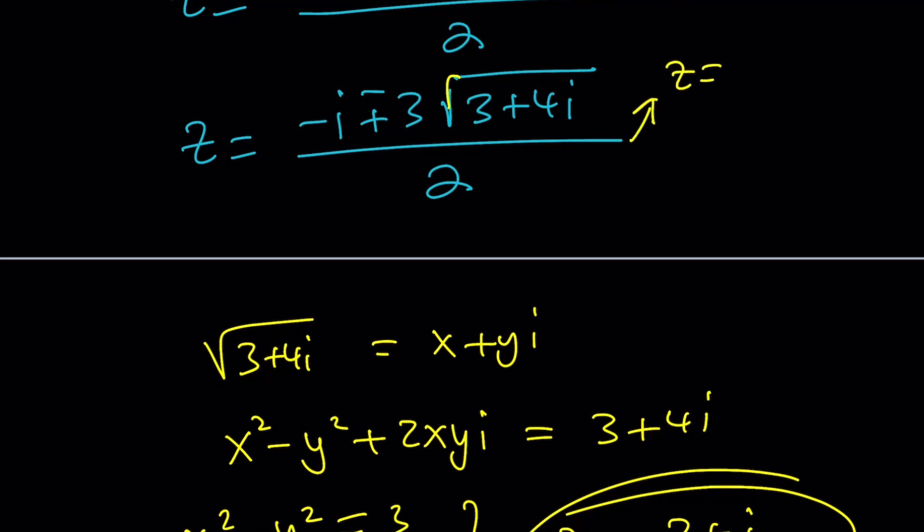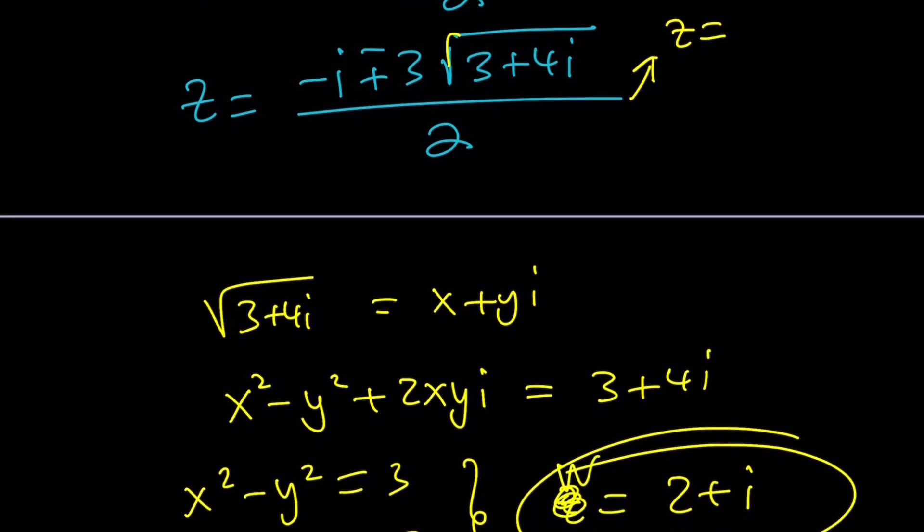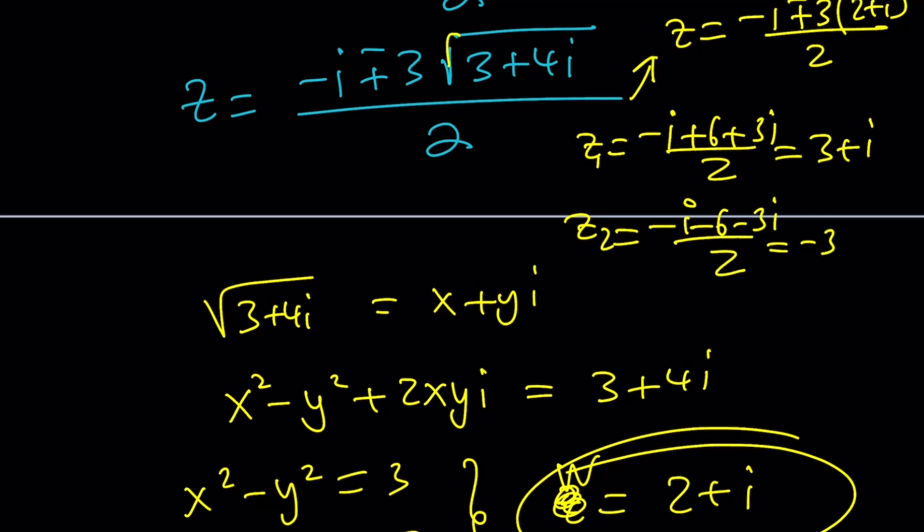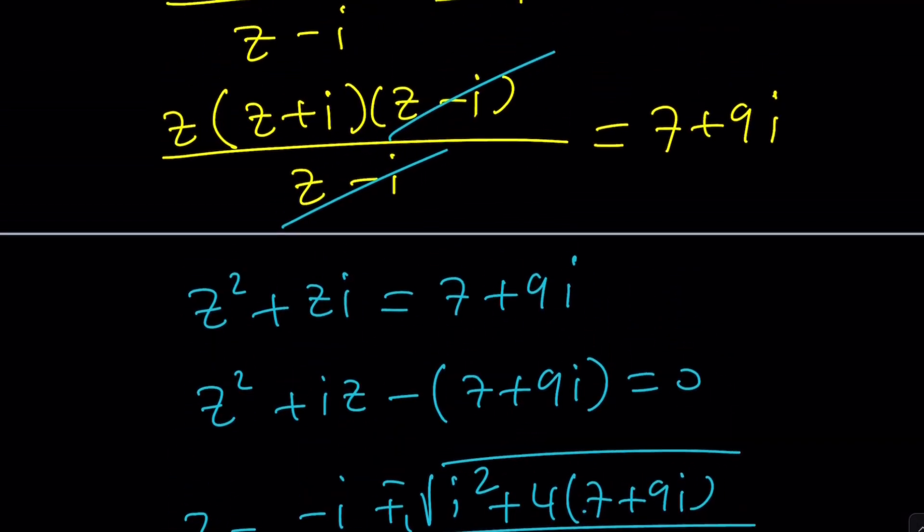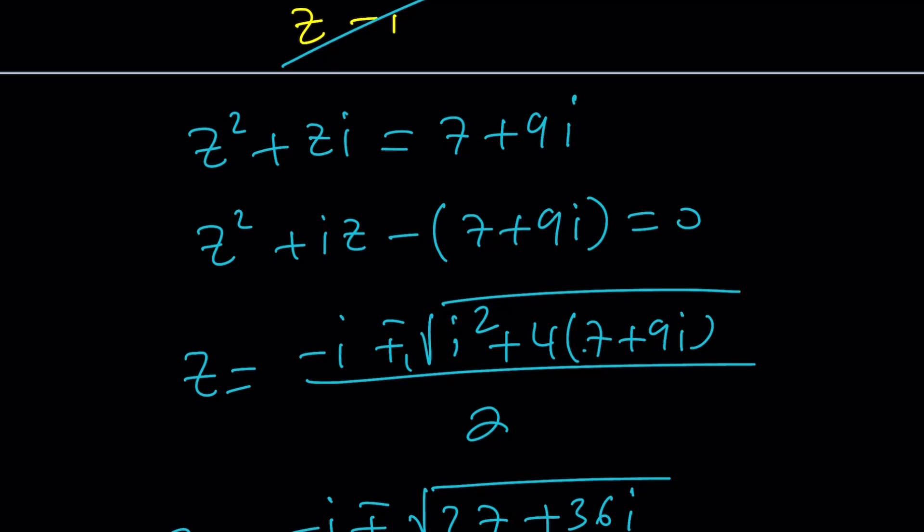So one of them is going to be, by the way, this shouldn't be called z. This is w, because z is already there. This is going to be -i plus minus 3 times this. Obviously, the plus minus is taking care of the square roots. So it gives me -i+6+3i over 2. That's going to be 6+2i, which is 3+i. And z₂ is going to be -i-6-3i divided by 2. That's -3-2i. All right, so there should be two solutions to this equation, because it's quadratic. Another way to look at it would be just replace z with a+bi and go with that. But I think this is good enough.